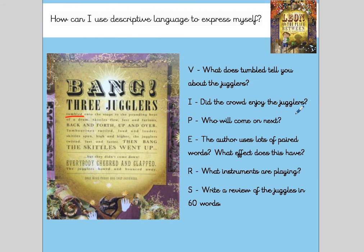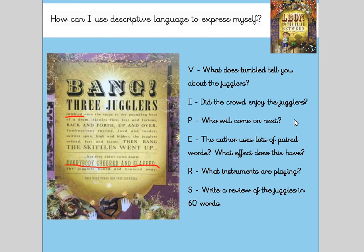We then have I for infer. Did the crowd enjoy the jugglers? This is inference because the story doesn't actually tell us directly whether they did or did not. So we have to look at the text and see what the crowd did that might infer they were enjoying the jugglers. It then talks about the fact that everybody cheered and clapped. If you cheer and clap at something, that tends to mean you're enjoying it. So we would answer: yes, because the text uses the words "everybody cheered and clapped," and that is what you would do if you were enjoying yourself.